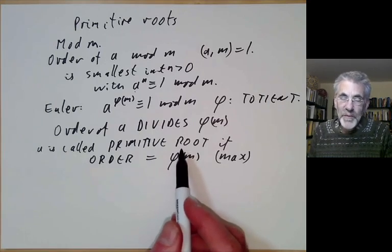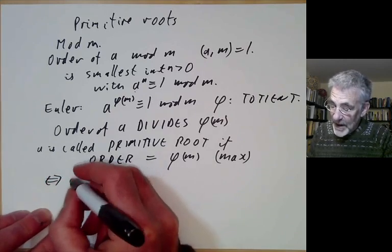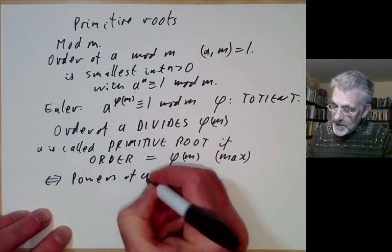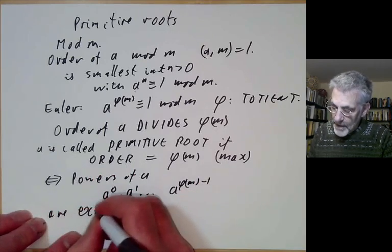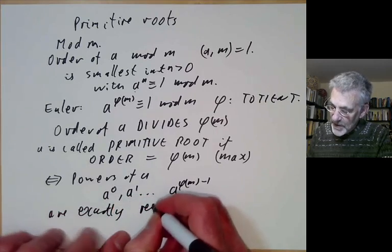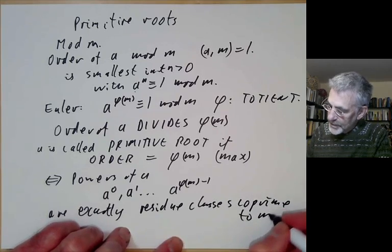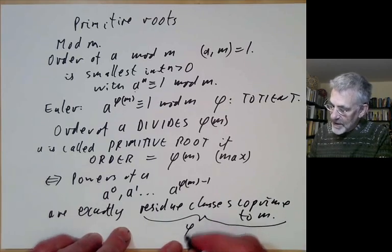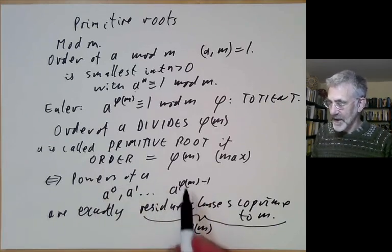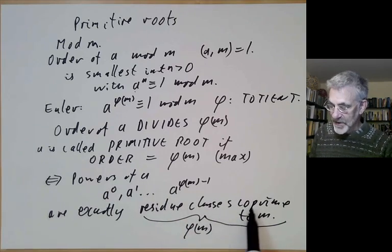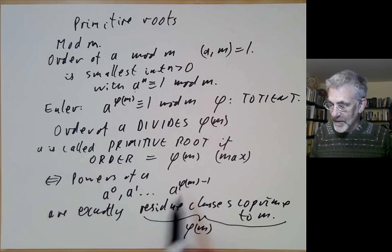The reason for the name primitive root is you can think of a as being a root of 1, because a to the power of something is equal to 1, and primitive means it has maximal possible order. So primitive root is short for primitive root of 1. This condition is equivalent to the condition that the powers of a — a to the 0, a to the 1, up to a to the phi of m minus 1 — are exactly the residue classes coprime to m.